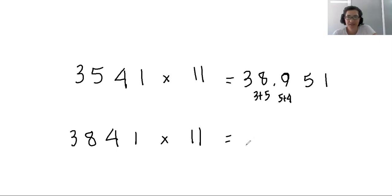Let's multiply this by 11 now. We have 3. 3 plus 8 make 11. And 8 plus 4 make 12. And then we have 4 plus 1 make 5. And the last digit is 1.